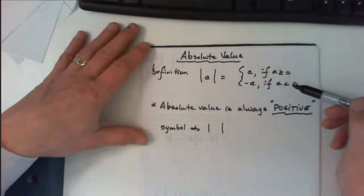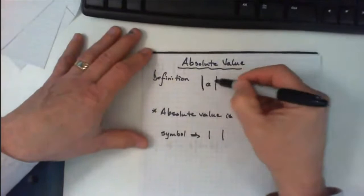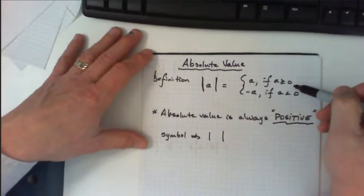The definition of absolute value, as you can see I've written here, is: the absolute value of a equals a if a is greater than 0, or negative a if a is less than 0.